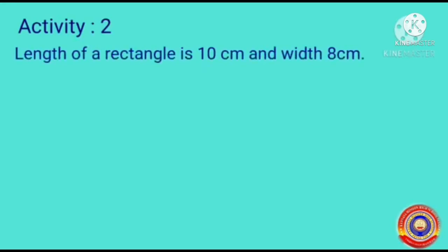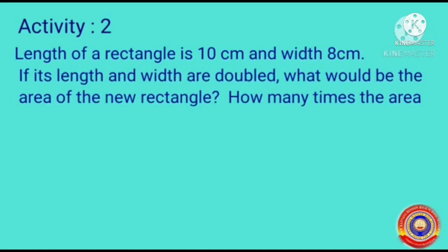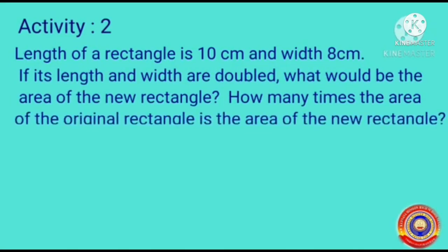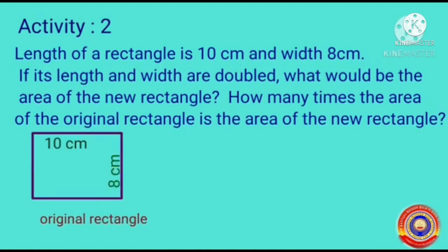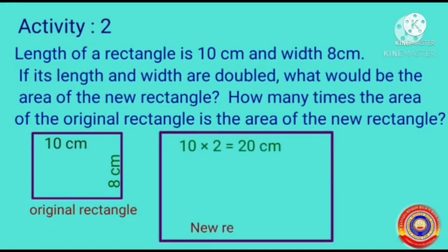The length of a rectangle is 10 cm and width 8 cm. If its length and width are doubled, what would be the area of the new rectangle? How many times the area of the original rectangle is the area of the new rectangle? In the original rectangle, its length is 10 cm and width is 8 cm. Its length and width are doubled. Therefore, in the newly formed rectangle, its length equals 10 x 2, which is equal to 20 cm, and its width equals 8 x 2, which is equal to 16 cm.